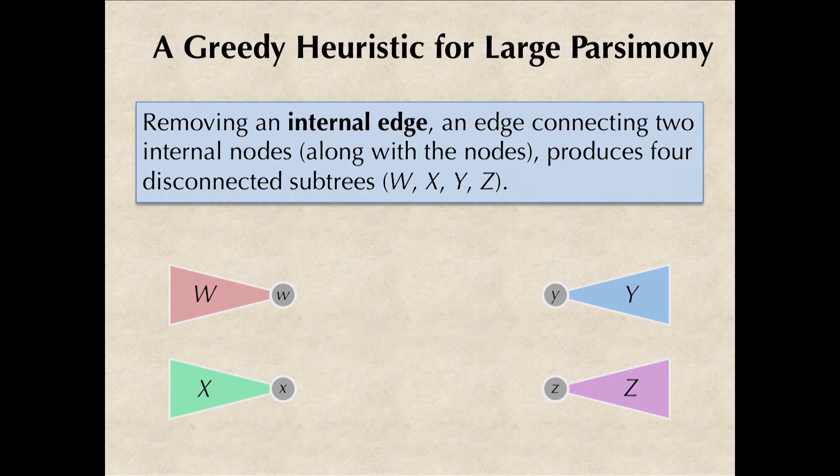then we can see that we have disconnected this unrooted binary tree into four disjoint subtrees, that I'll denote W, X, Y, and Z.